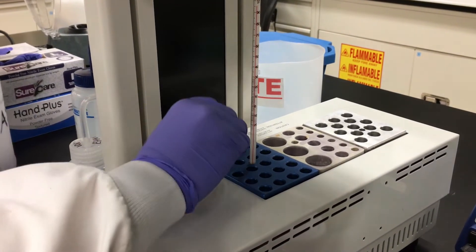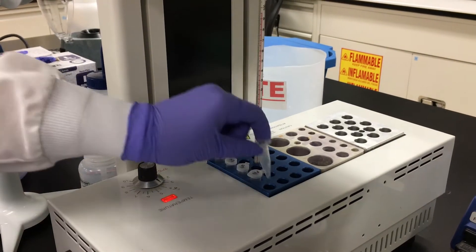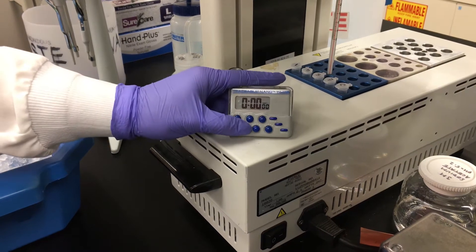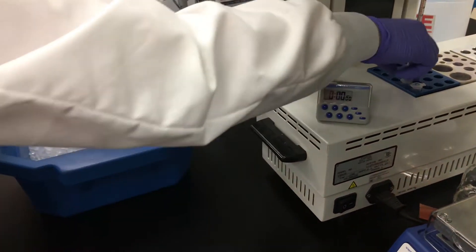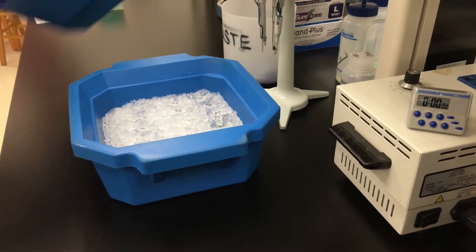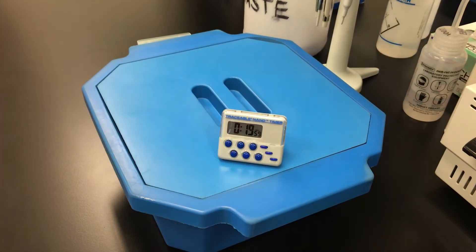Next, the samples are allowed to incubate at 95 degrees Celsius for two minutes. Once two minutes have passed, remove the samples from the heat block and quickly place them into an ice bath. Allow the samples to rest at 4 degrees Celsius or in your ice bath for 20 minutes.